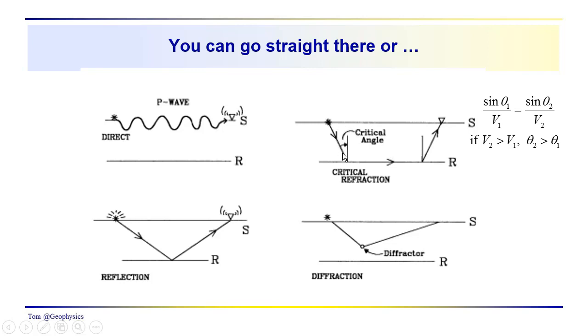Where the ray paths or the expanding wavefront, the ray paths are lines drawn normal to the expanding wavefront. They're going to obey Snell's law so that we have sine theta 1 over V1 is equal to sine theta 2 over V2.